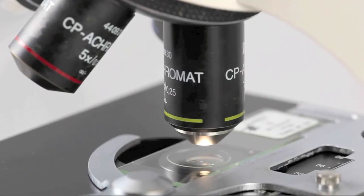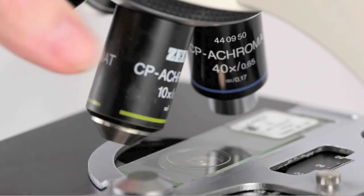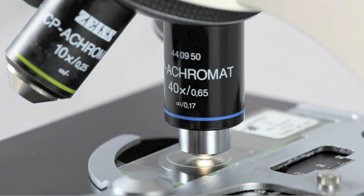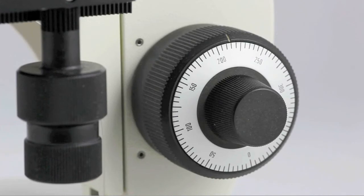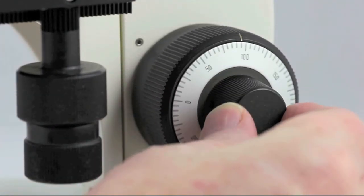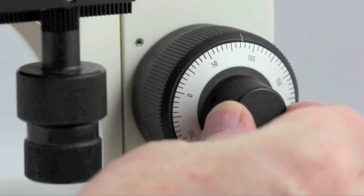Once you have centered and focused the object perfectly with the low-power objective, you can move on to the high-power objective. Notice how close this is to the slide. You must only focus with the high-power objective using the fine focusing knob, so that it does not break the slide.